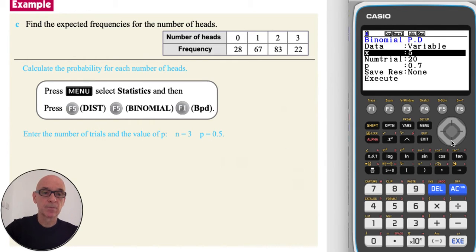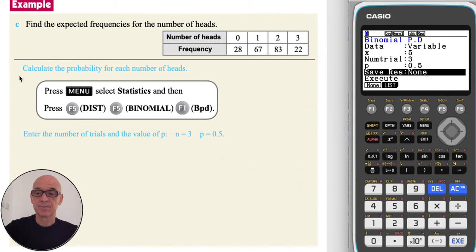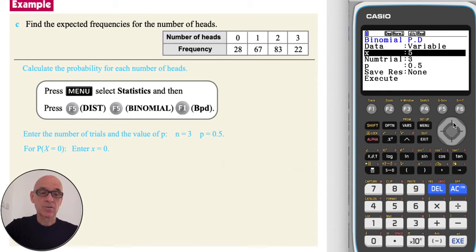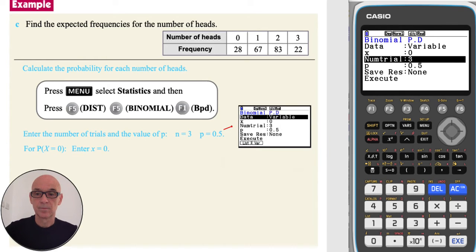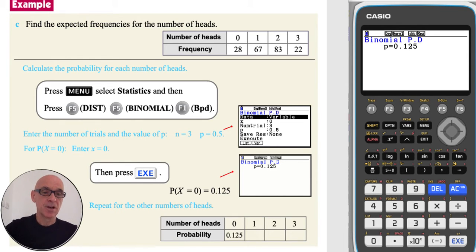To set up the distribution, we scroll down and set the number of trials n equal to 3. Press and execute. And set the probability of success P equal to 0.5. Press and execute. And then for the first category, or the first number of heads, scroll up and set X equal to 0. Press and execute to perform the calculation. And then writing down the probability.